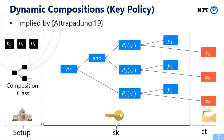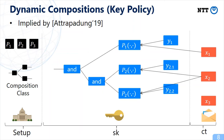In decryption, the composition policy is evaluated by P1, P2, and P3 with key attributes and ciphertext attributes. For example, if P1 is satisfied, P2 is not satisfied, and P3 is satisfied, then the policy is satisfied, so the ciphertext can be decrypted. As long as the policy belongs to the composition class, we can use any policies in the key generation.